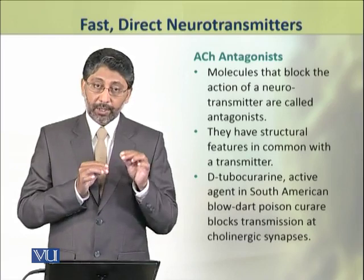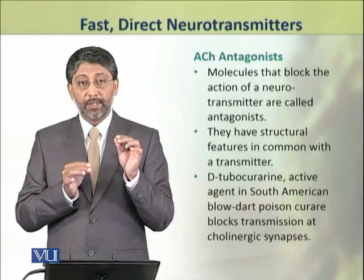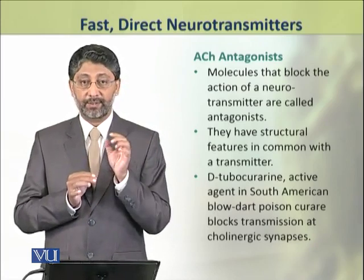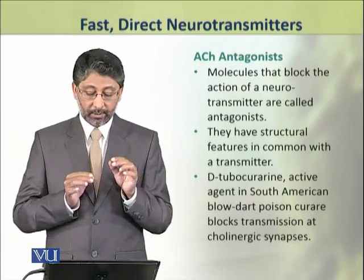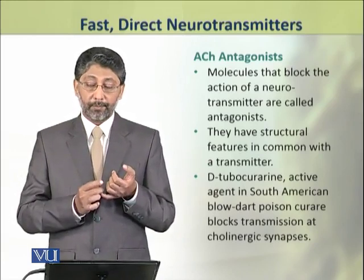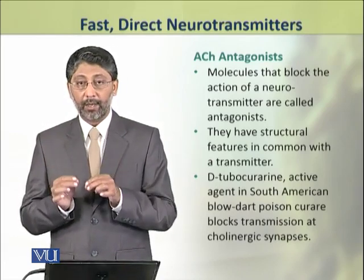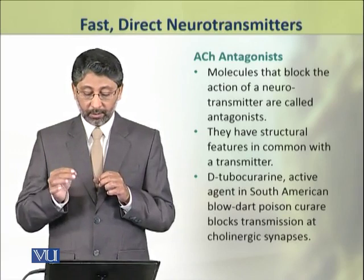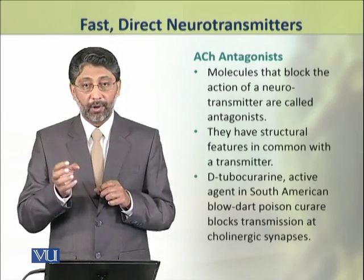Now we shall discuss the antagonists. Molecules which can block the action of a neurotransmitter are called antagonists. One antagonist of acetylcholine is D-tubocurarine, a molecule found in a poison — the South American blowdart poison curare. This poison blocks the transmission of choline at cholinergic synapses.